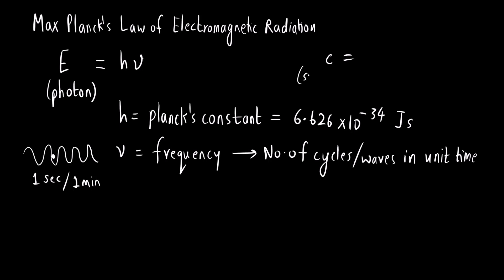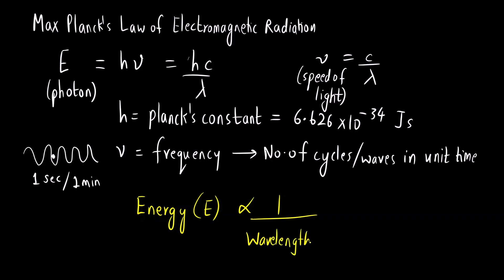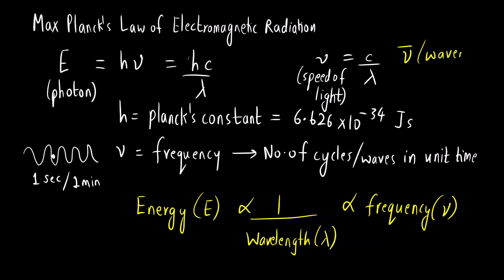The speed of light is c = νλ, so by substitution we get E = hc/λ. The key conclusion is that energy of a photon is inversely proportional to wavelength λ — higher energy means shorter wavelength — and directly proportional to frequency — higher energy means higher frequency. Another important term is wave number, which is 1/λ, inversely proportional to wavelength.